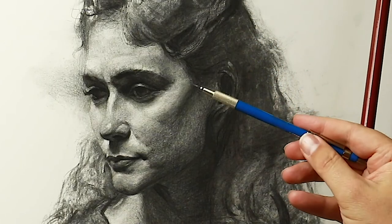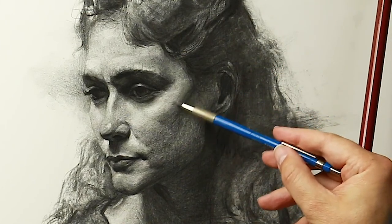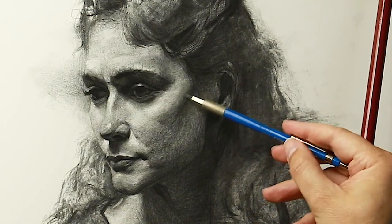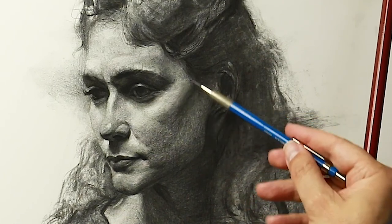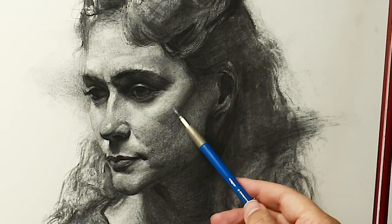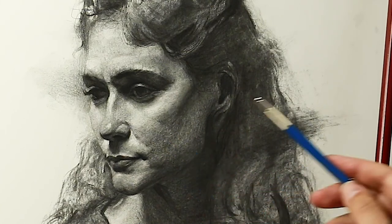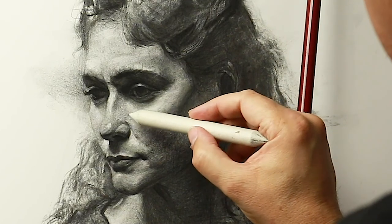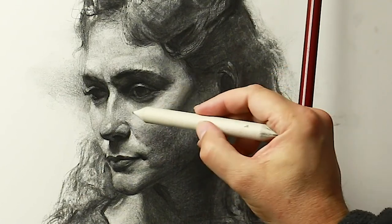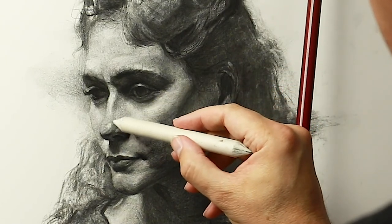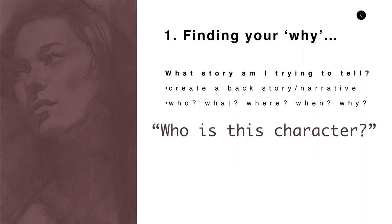If we're visual storytellers, we have to tackle this question: what story am I trying to tell? The first thing you need to do is create a backstory and narrative. It doesn't have to be anything as big as writing a novel — just some things you can use to springboard off of and start being creative with your portraits. Ask who, what, where, when, and why. Who is this character?